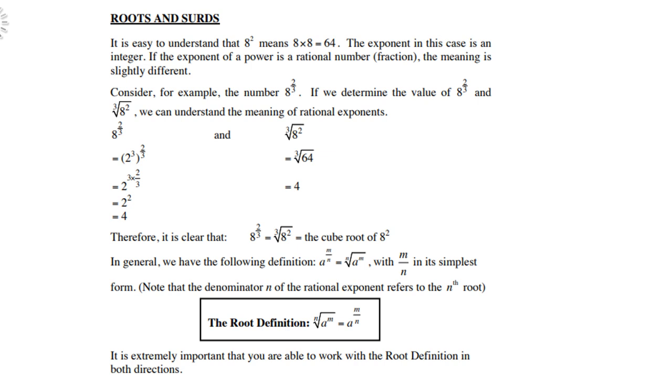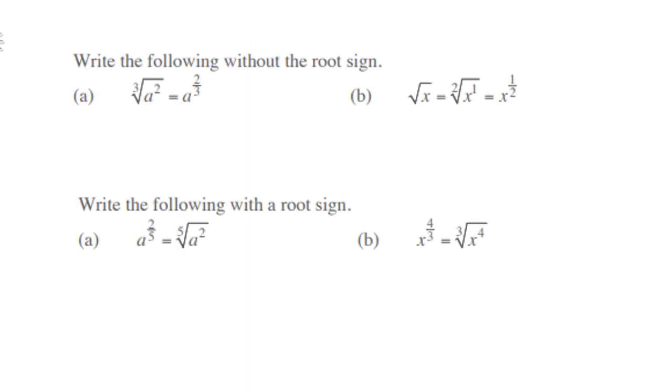Let's look at our examples. You must write the following without the root sign. The cube root of a squared is therefore a to the power two-thirds. Remember, the third is the denominator. x squared of x, remember x is x to the power 1 squared, got a 2 outside, so therefore x to the power a half.